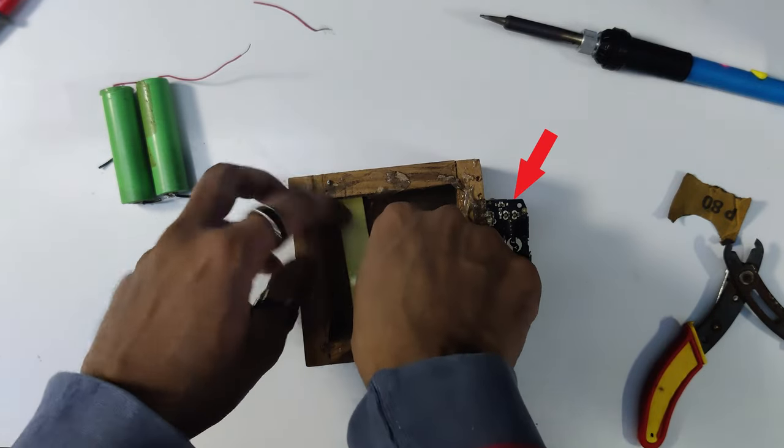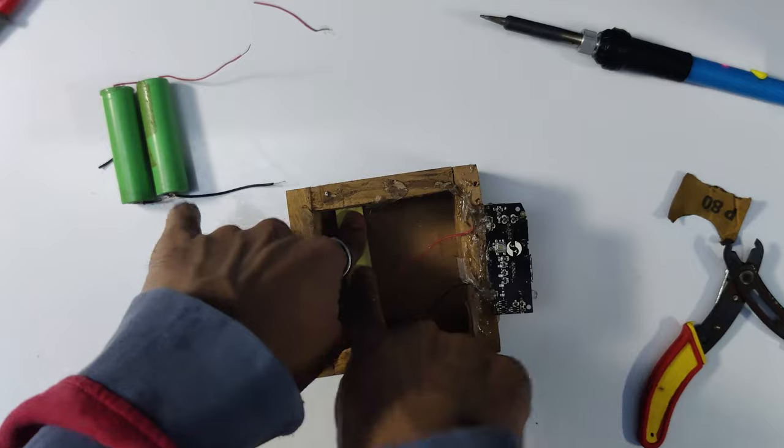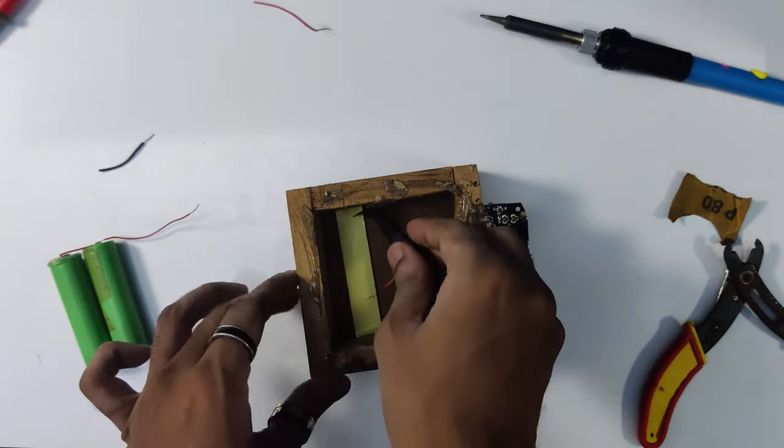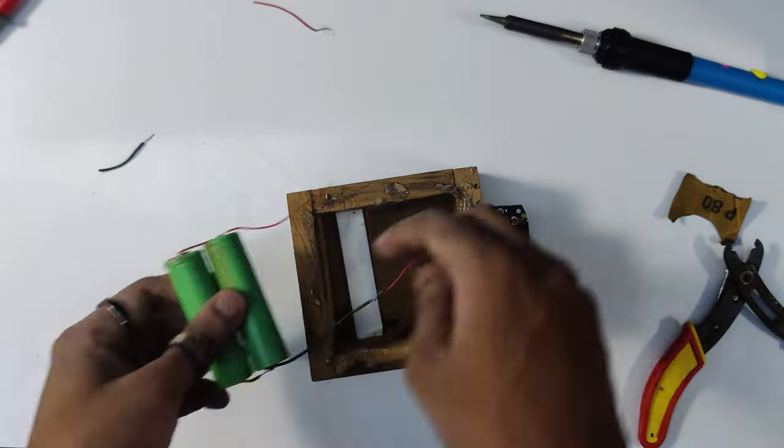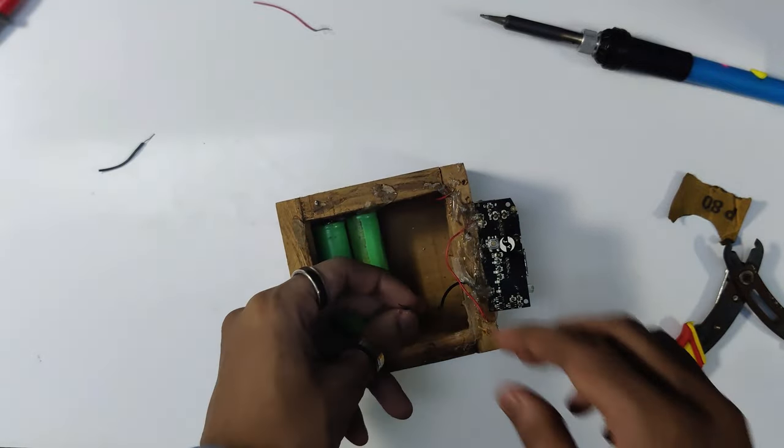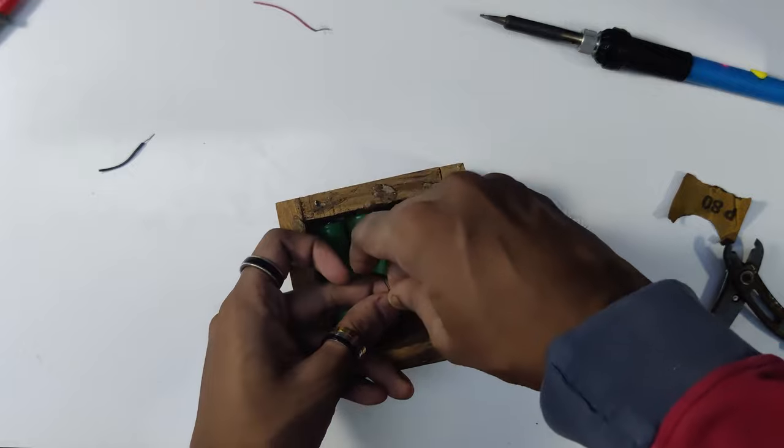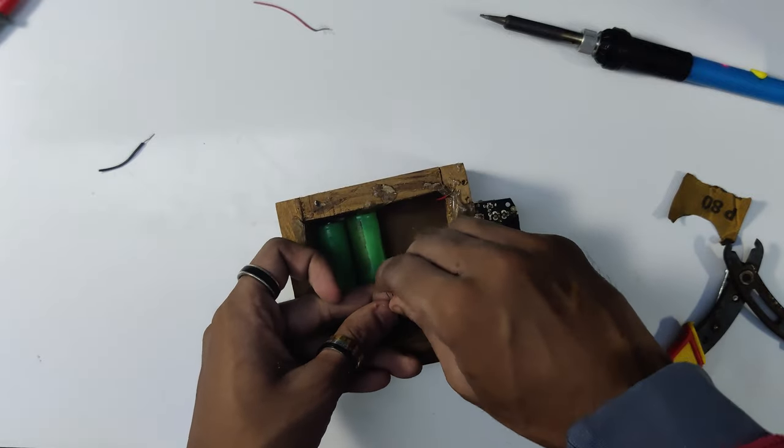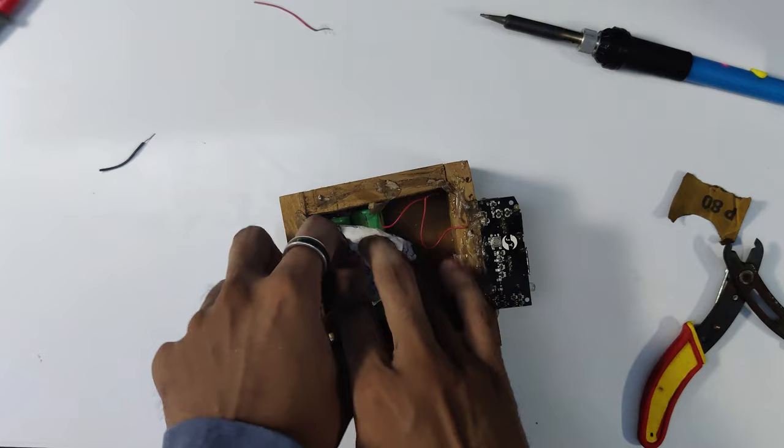This is a power bank module. Connect the battery's positive and negative terminal to the power bank module's positive and negative terminal respectively. Closing it.